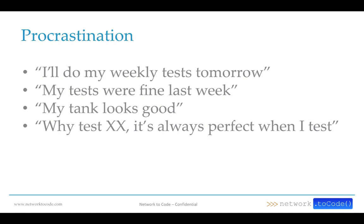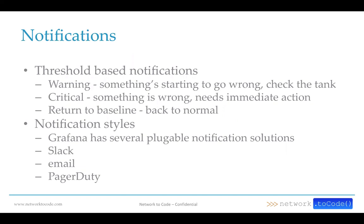This leads right into procrastination — I'll do my weekly test tomorrow, my tests were fine last week, the tank looks good so I don't need to test. If I'm testing every day at 12 o'clock, the light patterns may be impacting the pH at that moment. I'm not seeing the pH swing from 7.89 all the way up to 8.15 or 8.2 just doing one test a day. I'm not getting the full picture. I wanted to be proactive — get notifications if something is going wrong and address it before it becomes a problem.